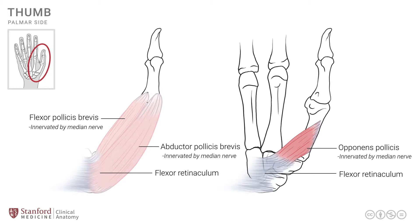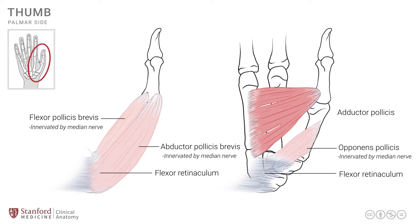One other muscle worth mentioning here, though it technically does not belong to the thenar group, is the adductor pollicis. It's a much larger muscle than the opponens, also located in the deeper area, and it extends from the metacarpal of the middle finger to the base of the proximal phalanx. It's not part of the thenar group, and we can confirm this because its innervation is also different.